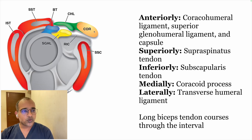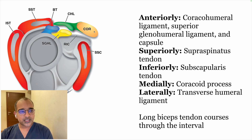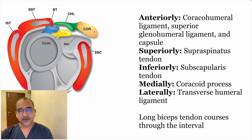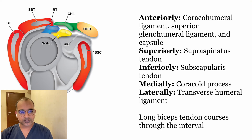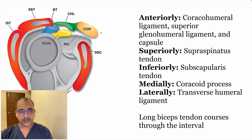The contents of the rotator interval include the long head of biceps tendon. Anteriorly, we have the coracohumeral ligament and superior glenohumeral ligament complex and joint capsule. Superiorly, we have the supraspinatus tendon. Inferiorly, we have the subscapularis tendon. And medially, we have the coracoid process.